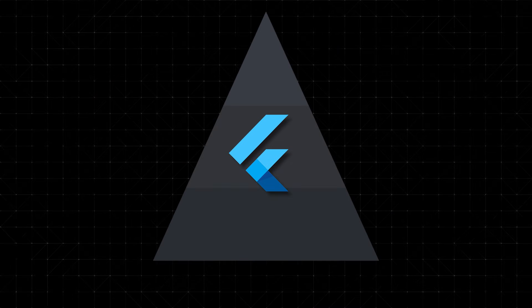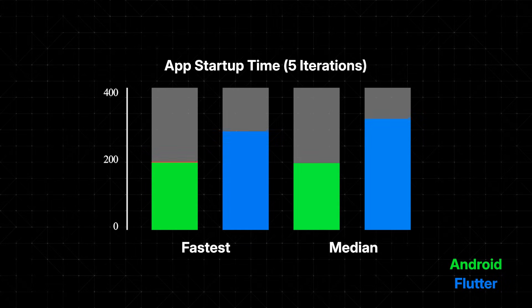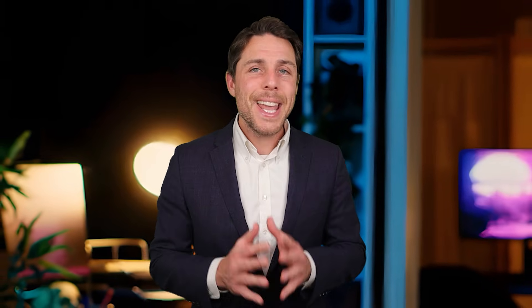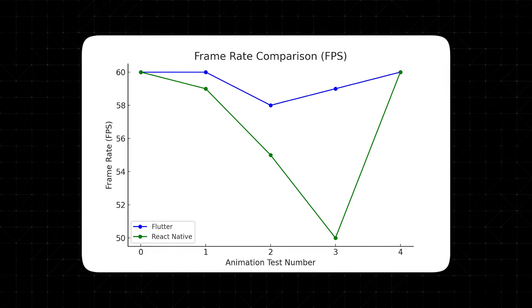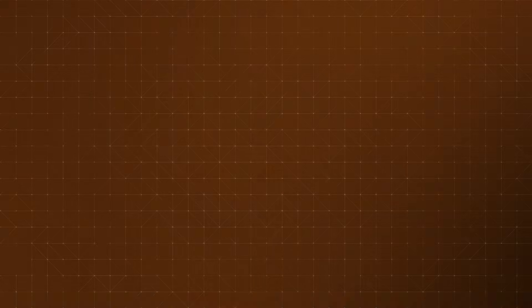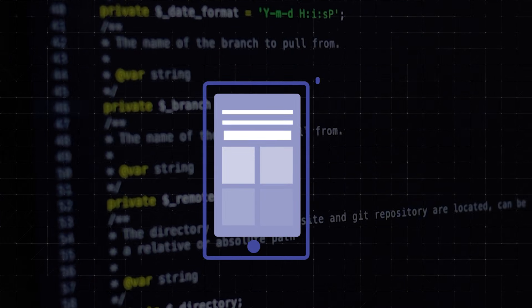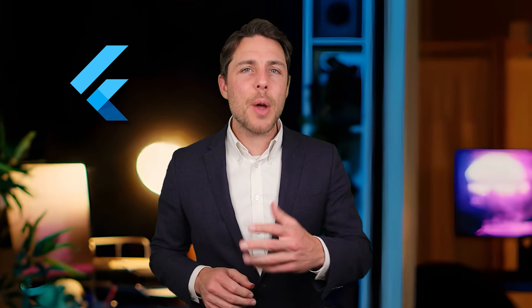Flutter's architecture really sets it apart when it comes to performance. It compiles directly to native ARM code, skipping the need for a bridge, which gives it near-native performance that can compete with truly native apps. This direct compilation means smooth animations, quick load times, and a highly responsive user experience. React Native, while it performs well in many situations, uses a JavaScript bridge to talk to native modules. This bridge, even though it's been optimized over time, can slow things down, especially in complex apps, graphics-heavy scenarios, or when there's a lot of back-and-forth communication between JavaScript and native code.